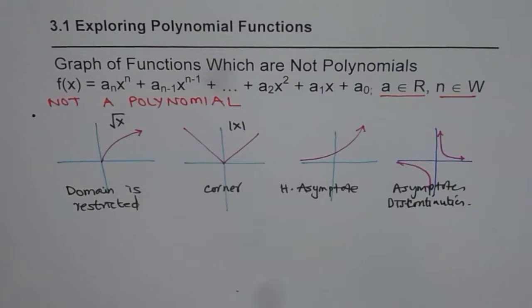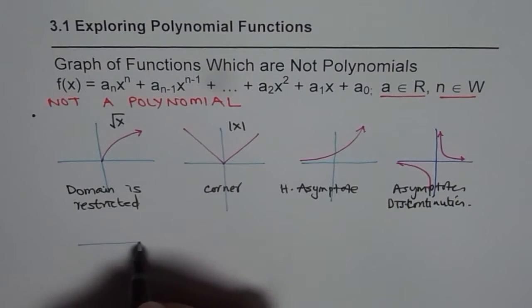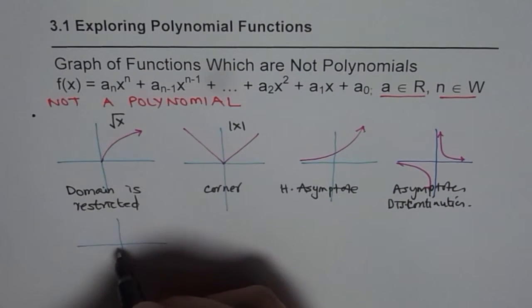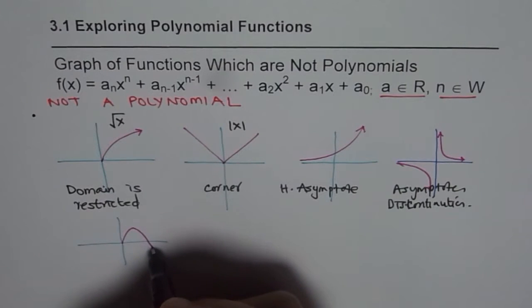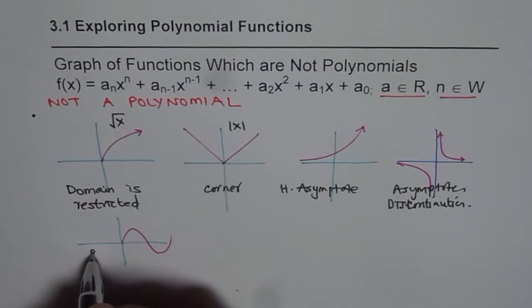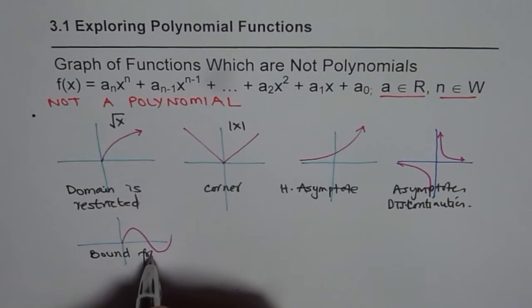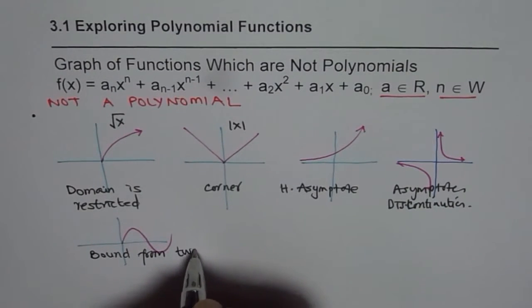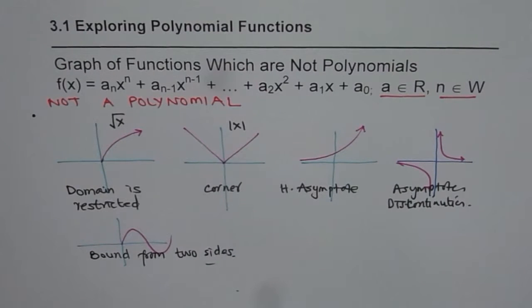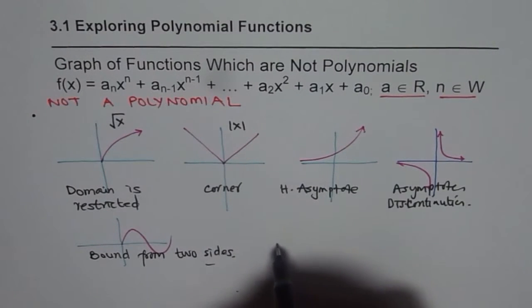Now can you tell me why the graph of sine of x does not represent a polynomial? It is bound from two sides. You see the range is bound from two sides. And therefore, this is not a polynomial.